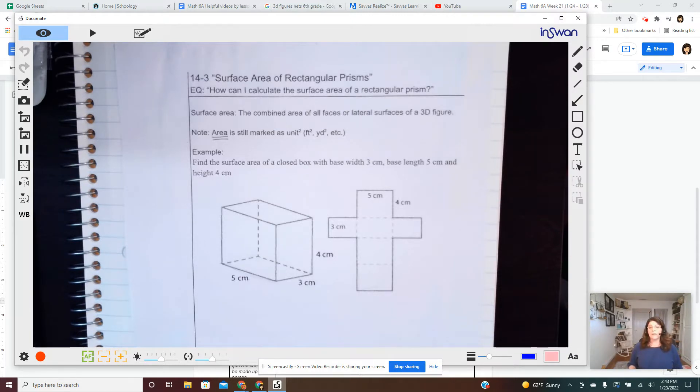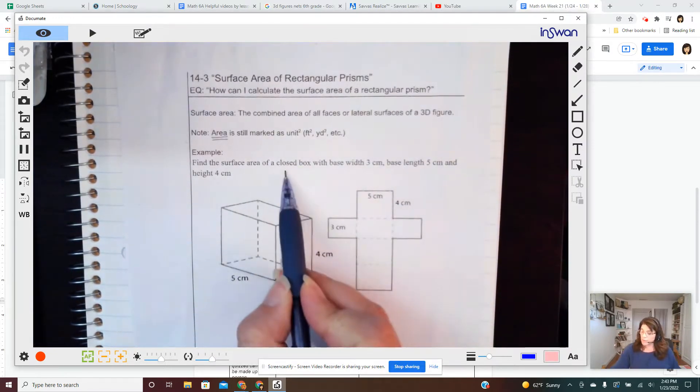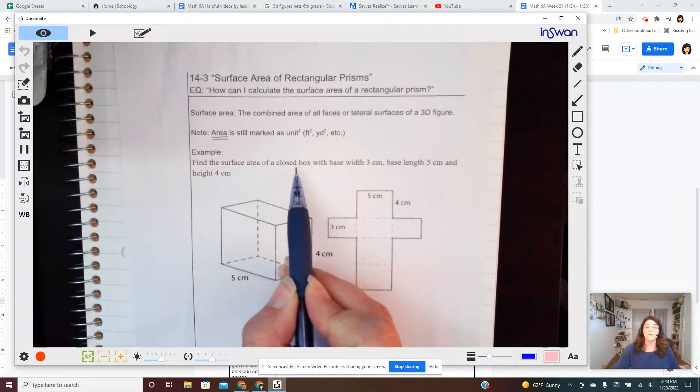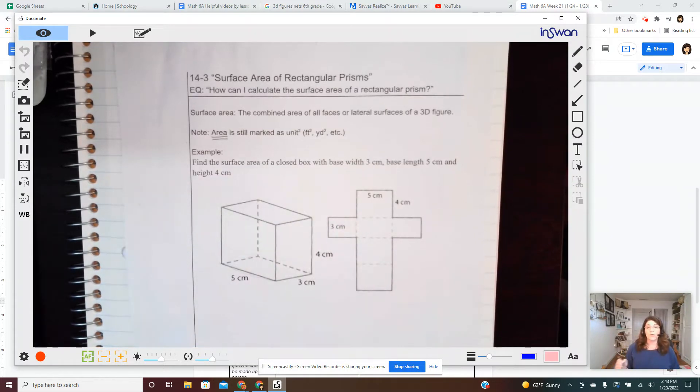And hand drawing a net can be a little bit of a challenge. So I encourage you to find the surface area of a rectangular prism in a way that makes sense to your brain. This is where you get some freedom. But you must represent all six surfaces and show work with formulas if it's a closed box or a closed prism.